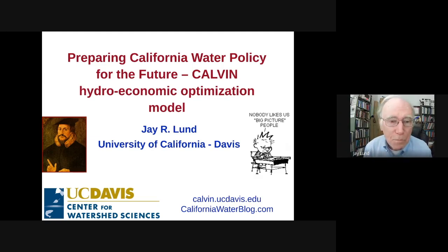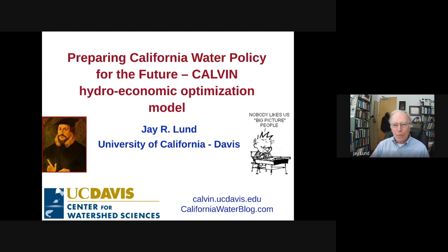Thank you very much. Today I want to talk a little bit about a project we've had running for about 20 years now called CALVIN — the California Value-Integrated Network — where we have built what is essentially a hydroeconomic optimization model. It mixes hydrology, engineering, and economics into an optimization model for looking at California's water problems.